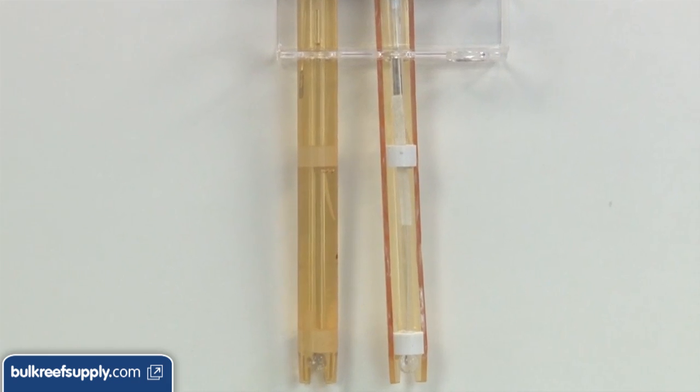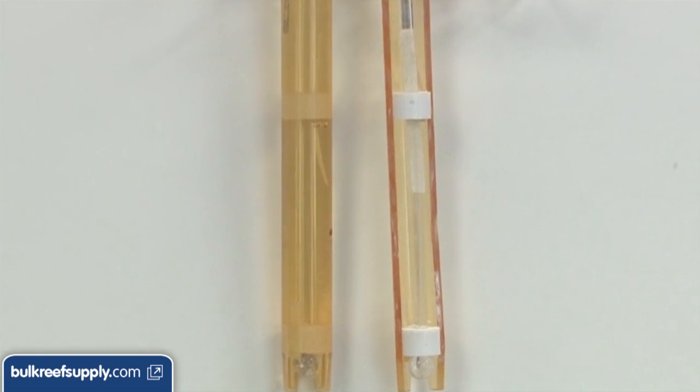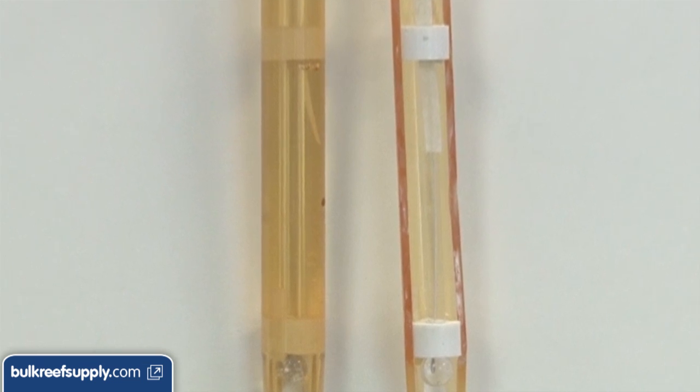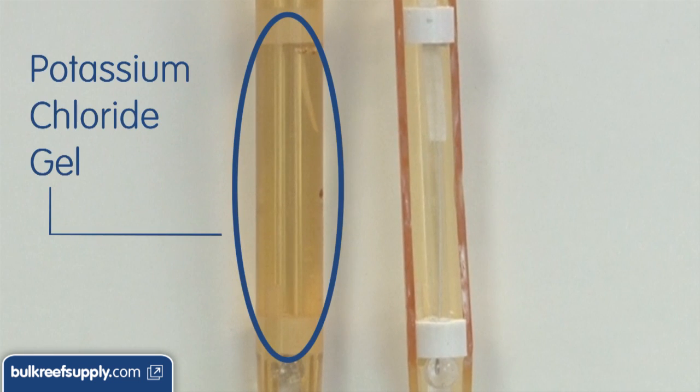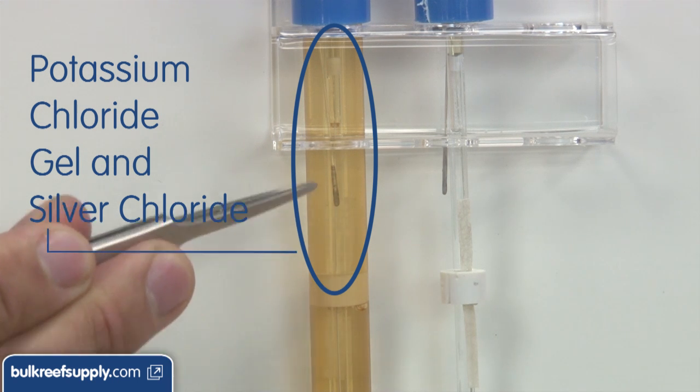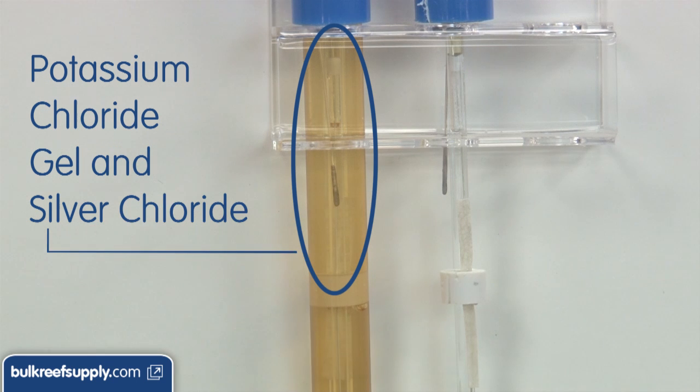The double junction design used in this probe has the first junction at the bottom of the probe and a second one located in the middle of the probe. This essentially divides the probe in half with two separate chambers. The chamber directly above the first junction and seal doesn't contain any silver, so this will greatly reduce the chances of any precipitation on the first junction. The second chamber towards the top of the probe contains the silver which is required for the reference probe to work properly. This design prevents precipitation by keeping the silver away from any junction that is in direct contact with the aquarium.